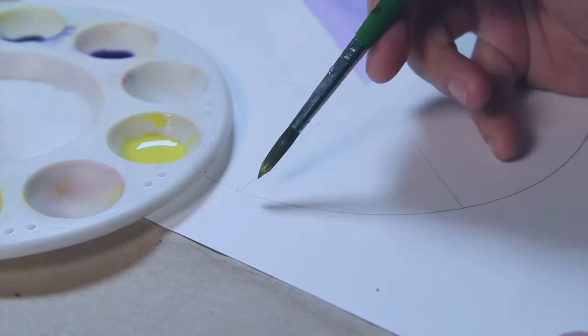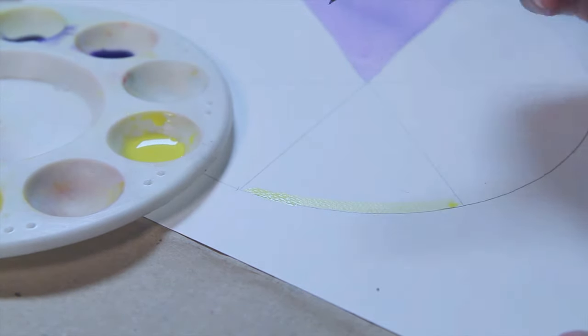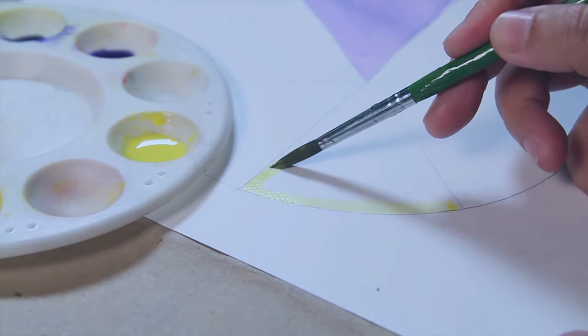When applying paint, try to color within the pie. You can apply paint on the sides first before painting the whole part. Remember, do not put too much, or else your paper will get soaked up with water.